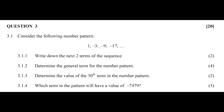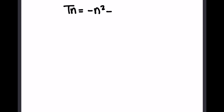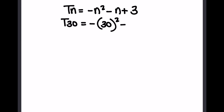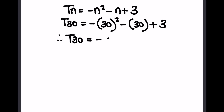The next question says determine the 30th term. Using the formula tn equals negative n squared minus n plus 3, term 30 equals negative 30 squared minus 30 plus 3, which gives us negative 927.